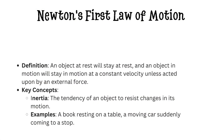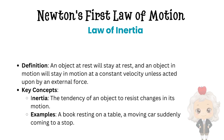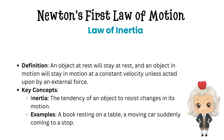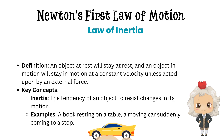Let's start our exploration with Newton's first law of motion, also known as the Law of Inertia. This law states that an object at rest will stay at rest, and an object in motion will stay in motion at a constant velocity unless acted upon by an external force. In other words, objects have a natural tendency to maintain their state of motion or rest. This property is called inertia.